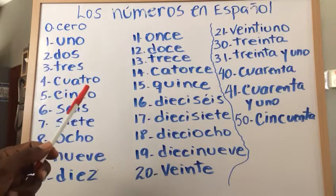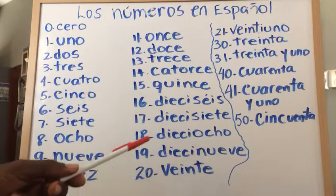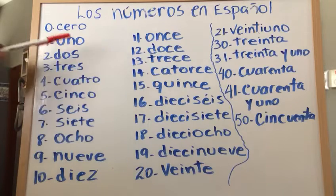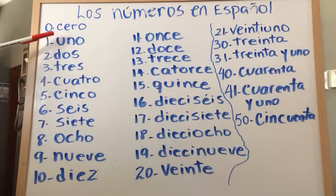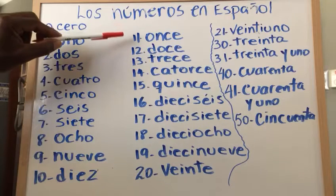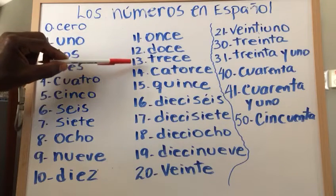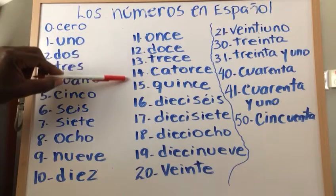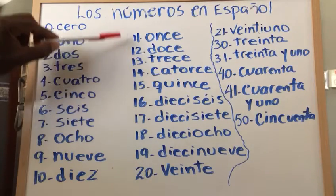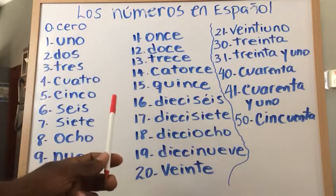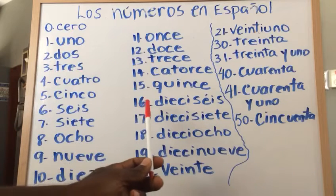From 16 on, it's just a combination of these numbers from 1 to 10. So 11, 12, 13, 14, 15 — those you really have to memorize. But when we come to 16, the pattern changes.